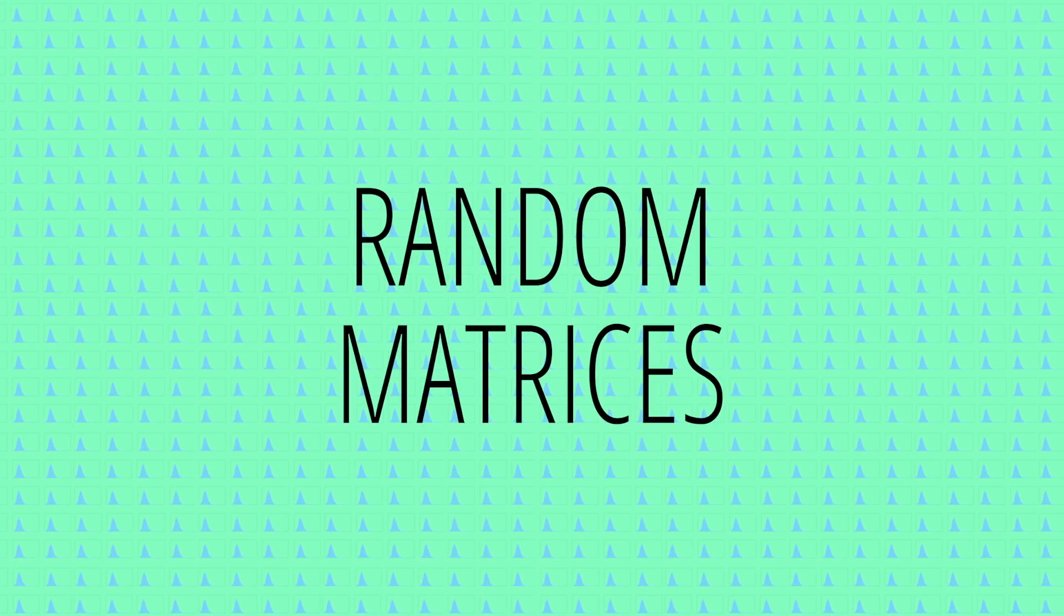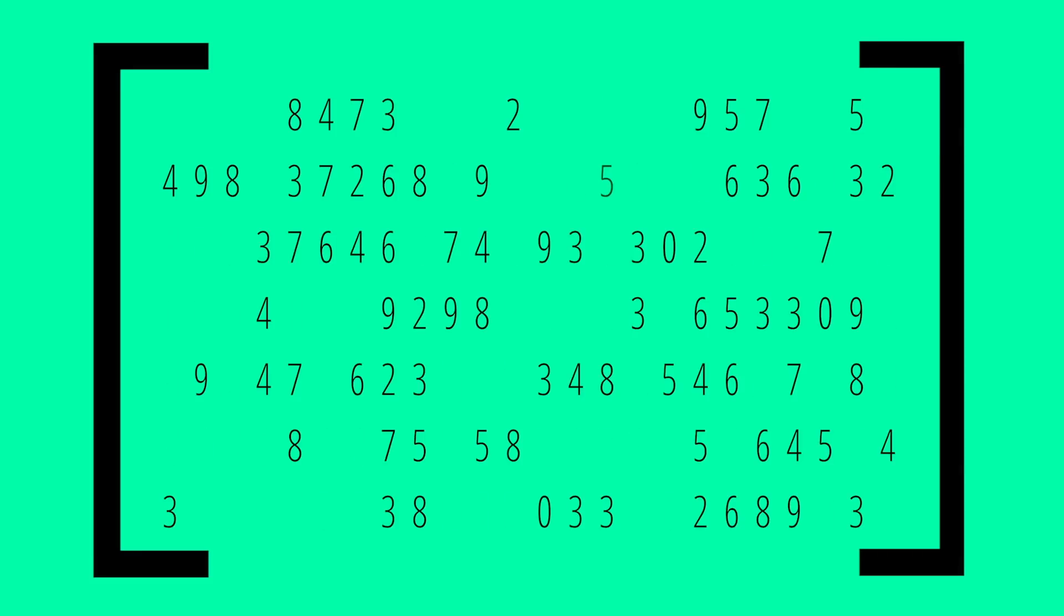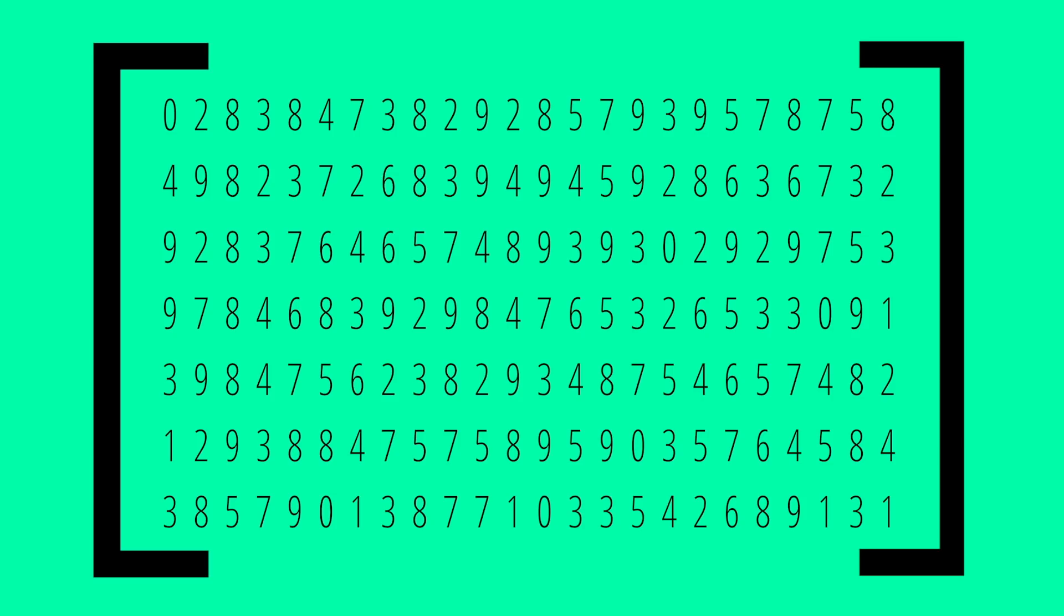Mathematicians model these complex correlated systems using random matrices. The numbers in random matrices are drawn randomly from probability distributions. The matrix might be randomly filled with zeros and ones, or with any set of numbers, like the integers between 1 and 100.